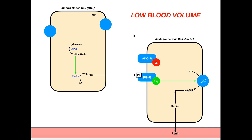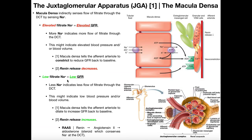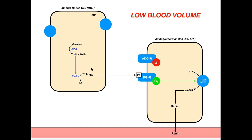By default, what the macula densa cell is going to be doing is converting arginine into nitric oxide through the enzyme nitric oxide synthase. This nitric oxide activates an enzyme called COX-2 — one of the isoforms of cyclooxygenase — which converts arachidonic acid into substances called prostaglandins. The macula densa cell is going to produce these prostaglandins as long as sodium levels are low.